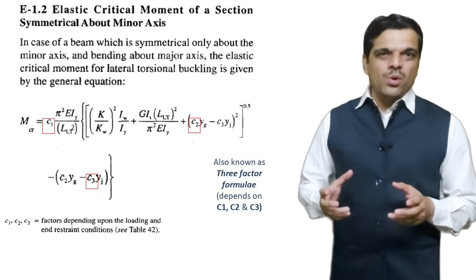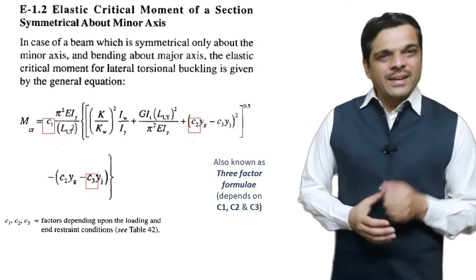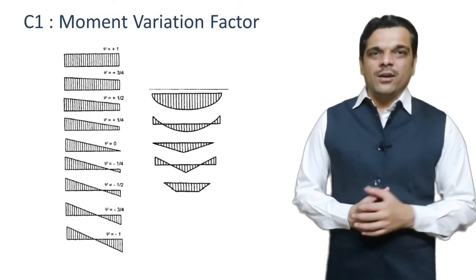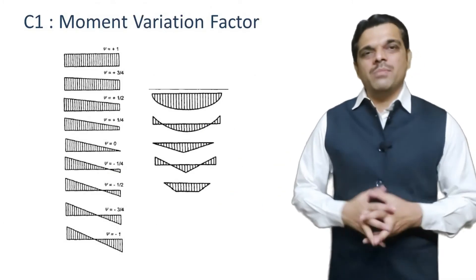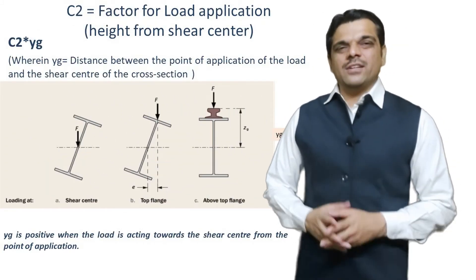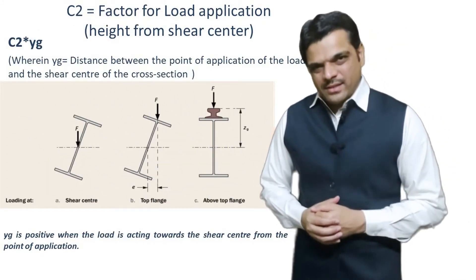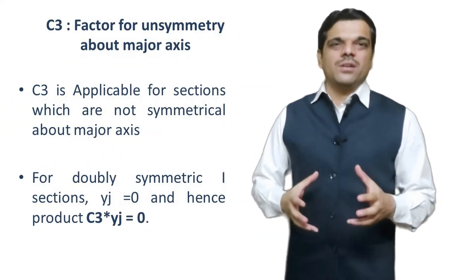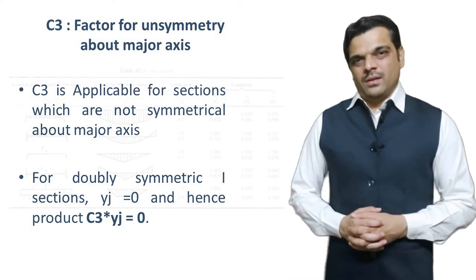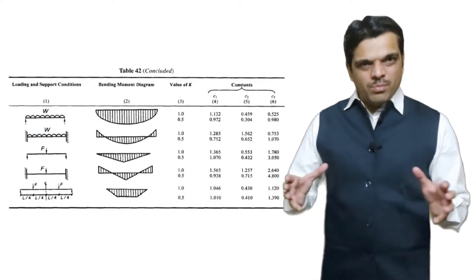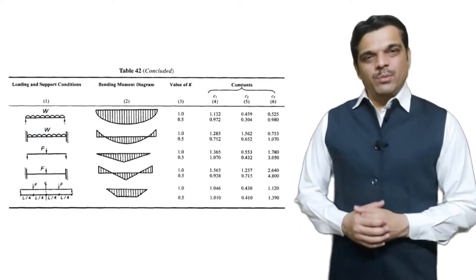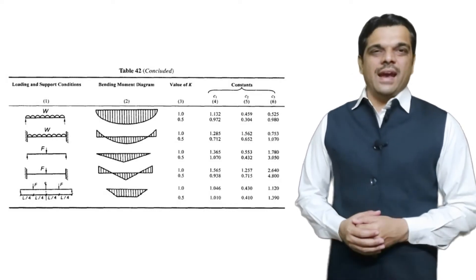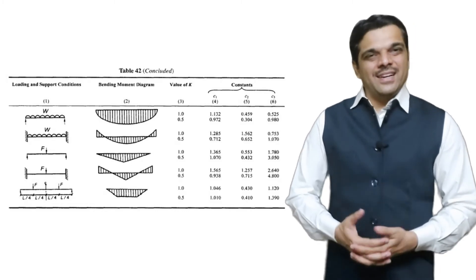This is also known as the three-factor formula. Factor C1 is dependent upon the variation of bending moment across the length of the member. C2 accounts for the height of application of load above the shear center. C3 is about non-symmetry of the cross section about both axes. K accounts for different boundary conditions. Table 42 of the code gives different values of C1, C2, C3, and coefficient K for different conditions.